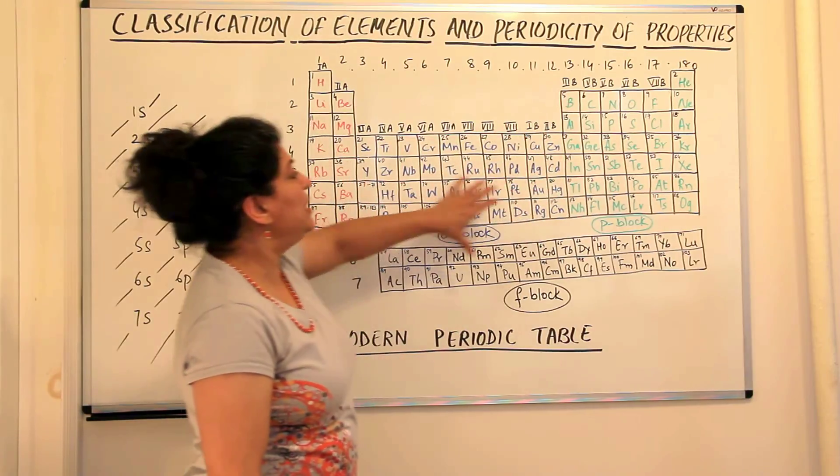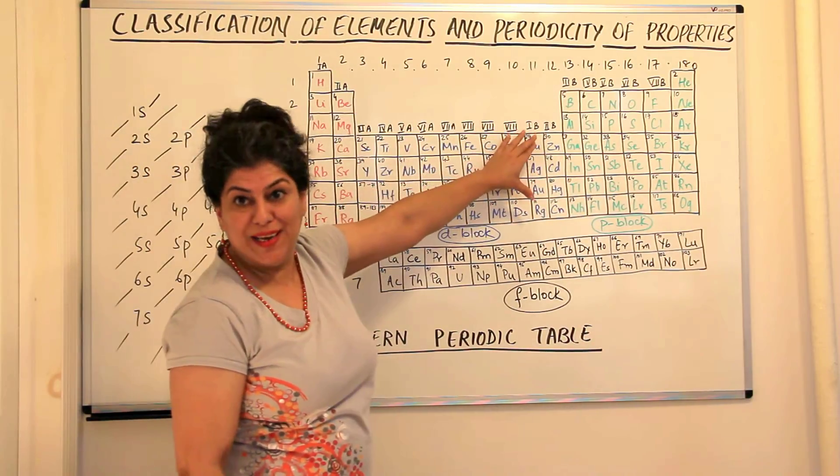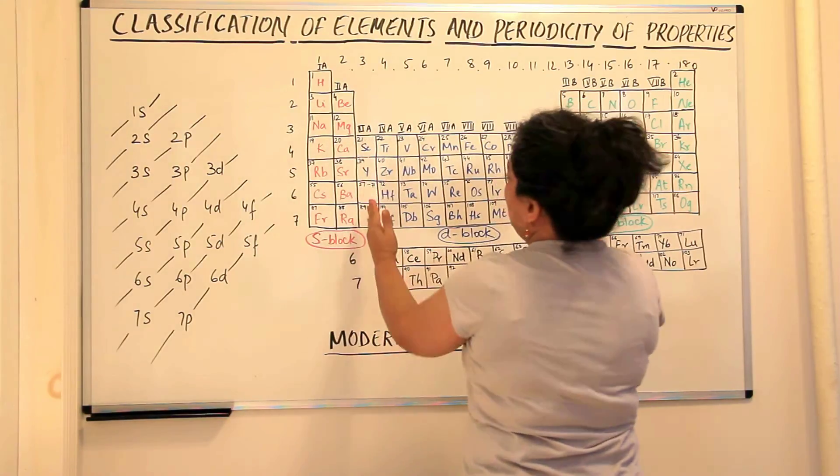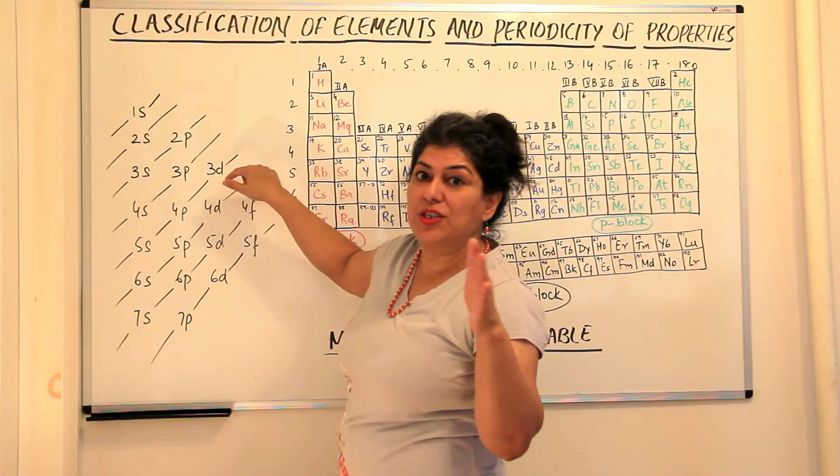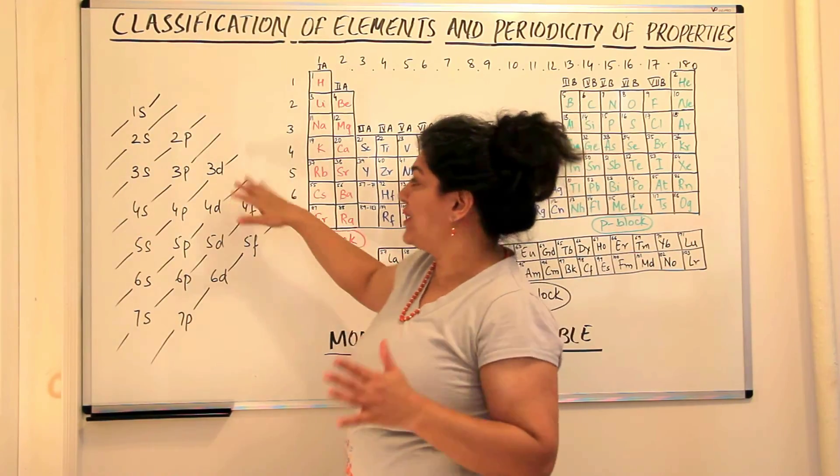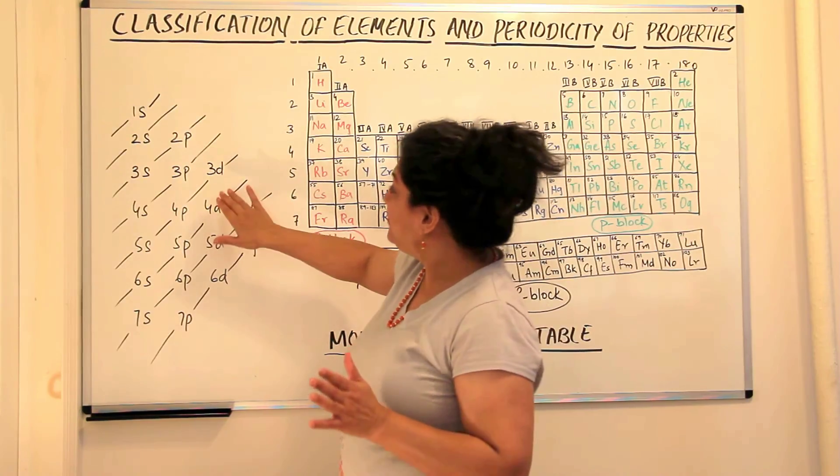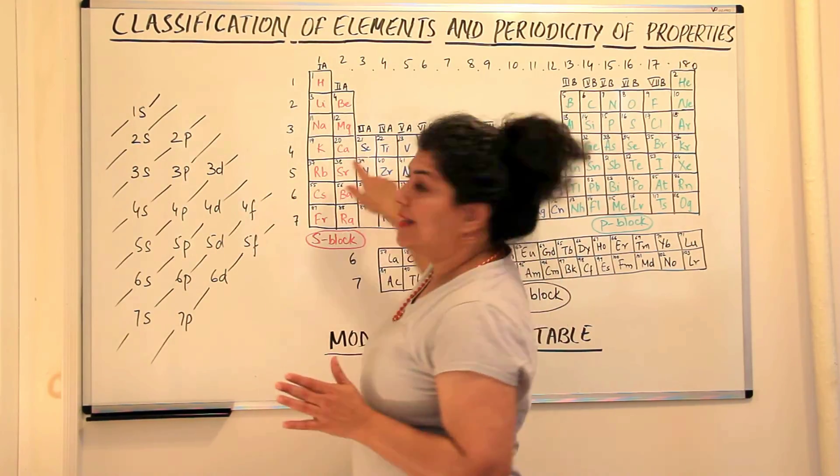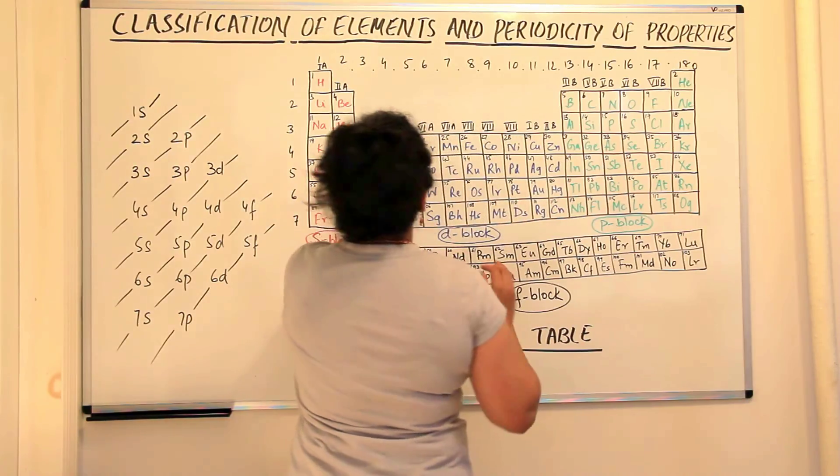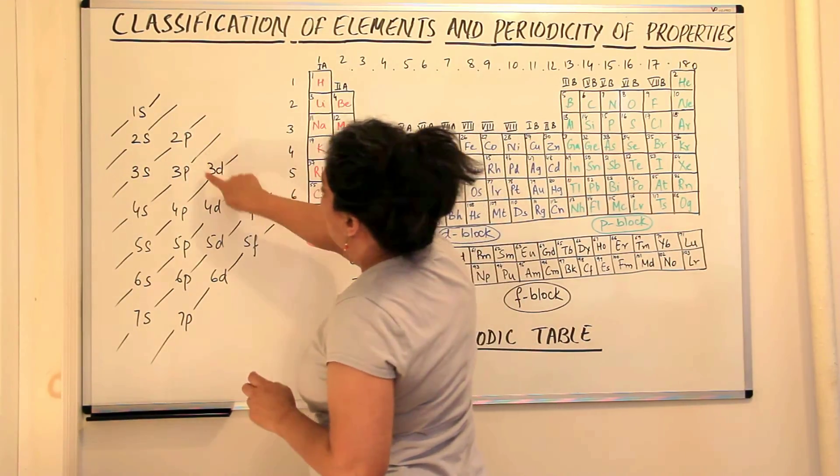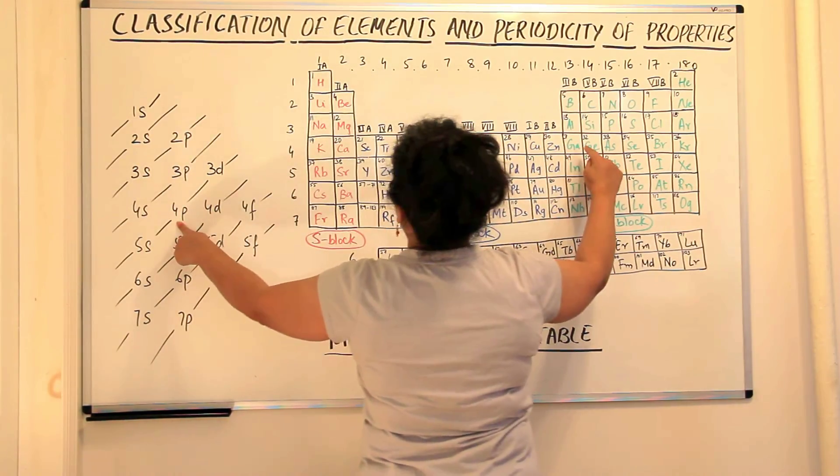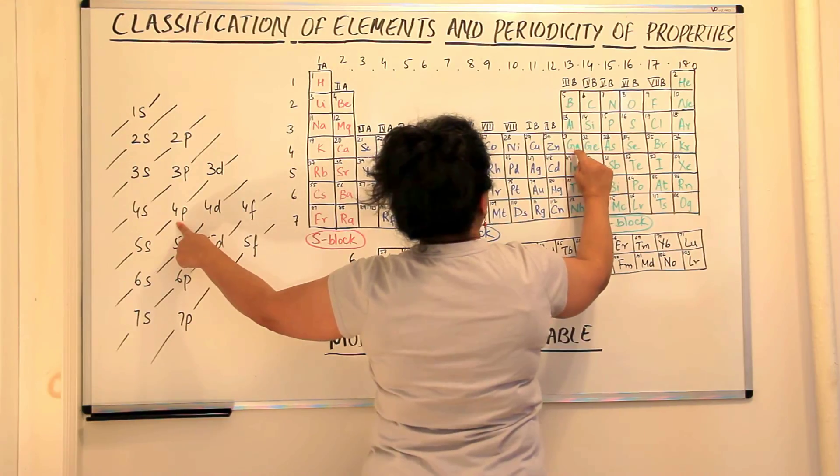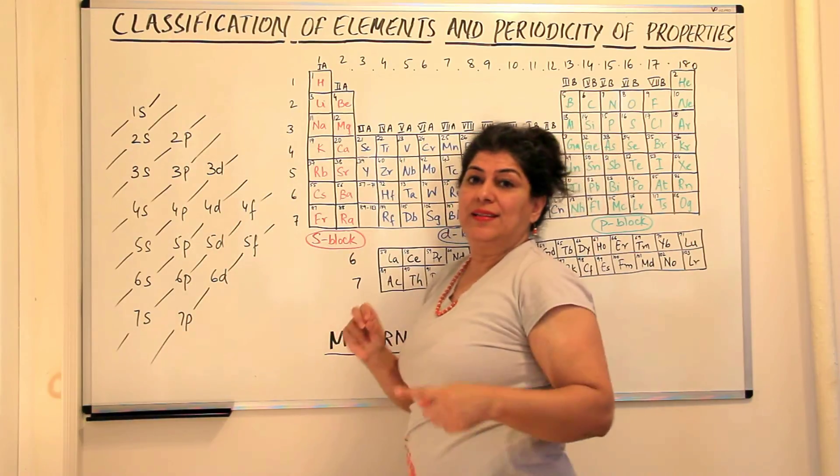So here we have the d block. We call it the d block elements. And here the d orbitals are being filled up. And then after, I might have to continue, this video might break, so I might have to continue explaining this in the next video. Please bear with me. So the 3d orbitals, they are 10 in number. So once the 10 orbitals in the 3d are filled up, the next electron goes to 4p. So do you see here that in 4p you have gallium. The electron goes to the 31st element would be gallium and the electron would go to...